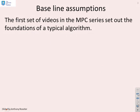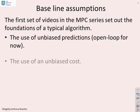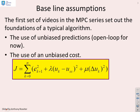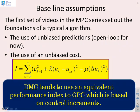The first set of videos in the MPC series set out the foundations of a typical algorithm. So we said you needed unbiased predictions and an unbiased cost, and this was an example of a typical cost that we used. Now what you'll find is that DMC tends to use an equivalent performance index to GPC. So that is, this term here is not used very often, and generally the focus is on weighting the control increments.